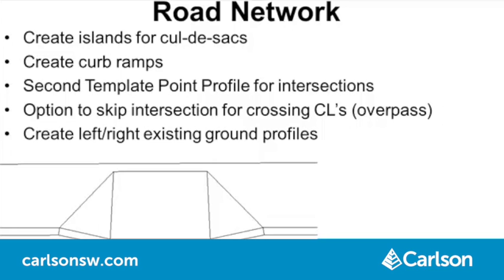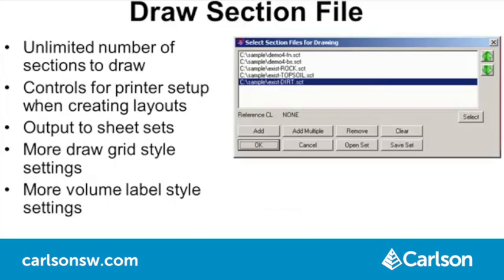For creating existing ground profiles, there's a new ability to create offset profiles to the left and right. Draw Section File now supports drawing an unlimited number of sections instead of being limited to six cross sections at a time. When creating layouts, Draw Section now has controls for setting up the layout printer and page size, plus the ability to output to sheet sets. There are many new style settings, such as for the grid style and volume labels.